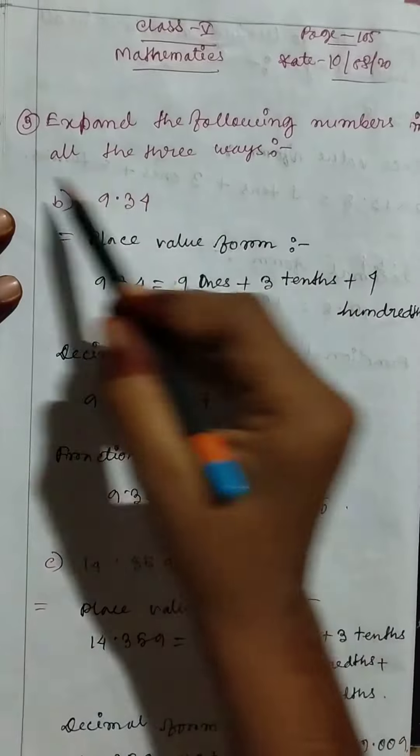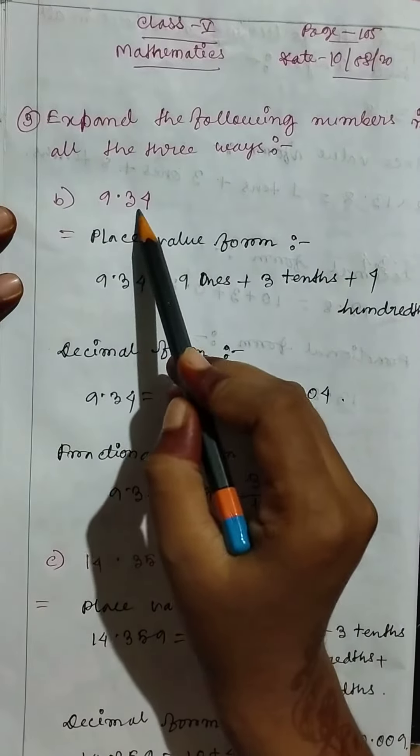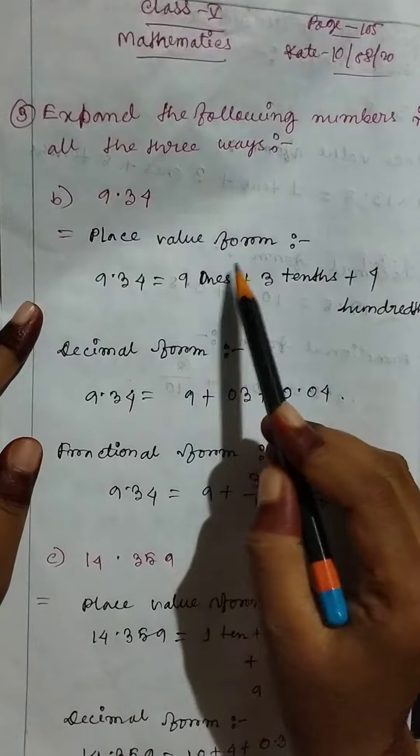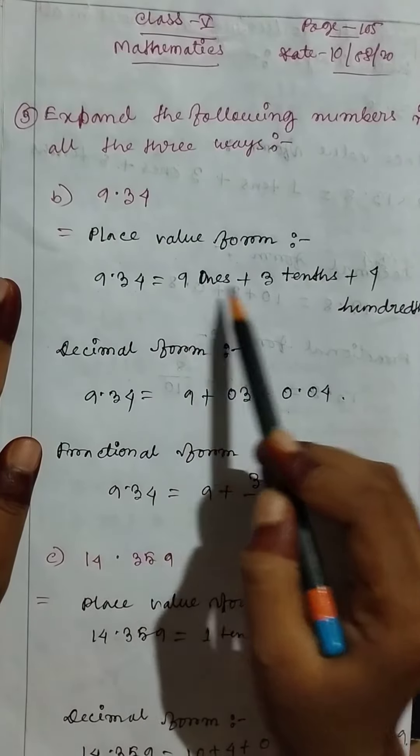Part b: 9.34. So place value form: 9.34 equals 9 ones plus 3 tenths plus 4 hundredths.